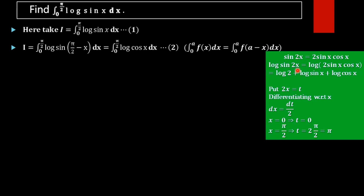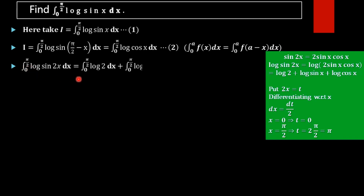We can rewrite log(sin 2x) as log(2 sin x cos x), which equals log 2 + log(sin x) + log(cos x), using the property log(ab) = log a + log b. So we rewrite the integral from 0 to π/2 of log(sin 2x) dx as the integral of log(sin x) dx plus the integral of log(cos x) dx, both from 0 to π/2.